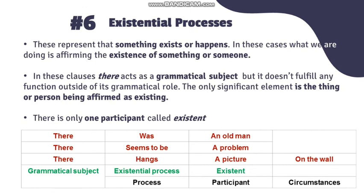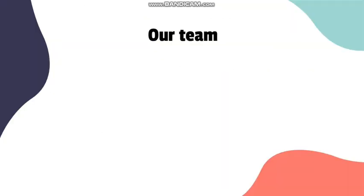Existential process represents that something exists or happens, affirming the existence of something or someone. 'There' acts as a grammatical subject but doesn't fulfill any function outside its grammatical role. There is only one participant, called existence. Examples: 'There was an old man' — there: grammatical subject, was: existential process, an old man: existence. 'There hangs a picture on the wall' — there: grammatical subject, hangs: existential process, a picture: existence, on the wall: circumstance.